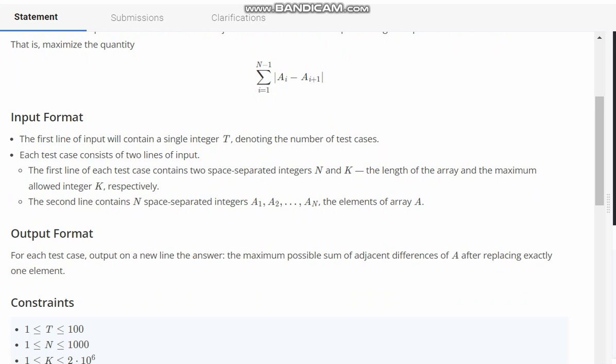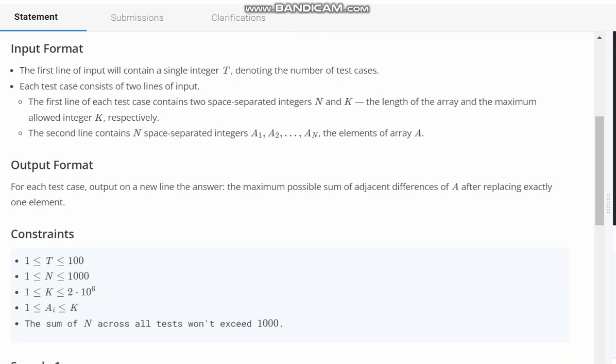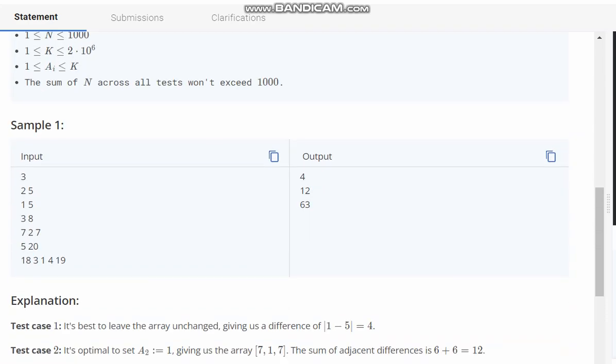T is the number of test cases. N and K are the length of array and maximum allowed integer. The second line contains the elements of array A. We need to output the maximum possible sum of adjacent differences of A after replacing exactly one element.